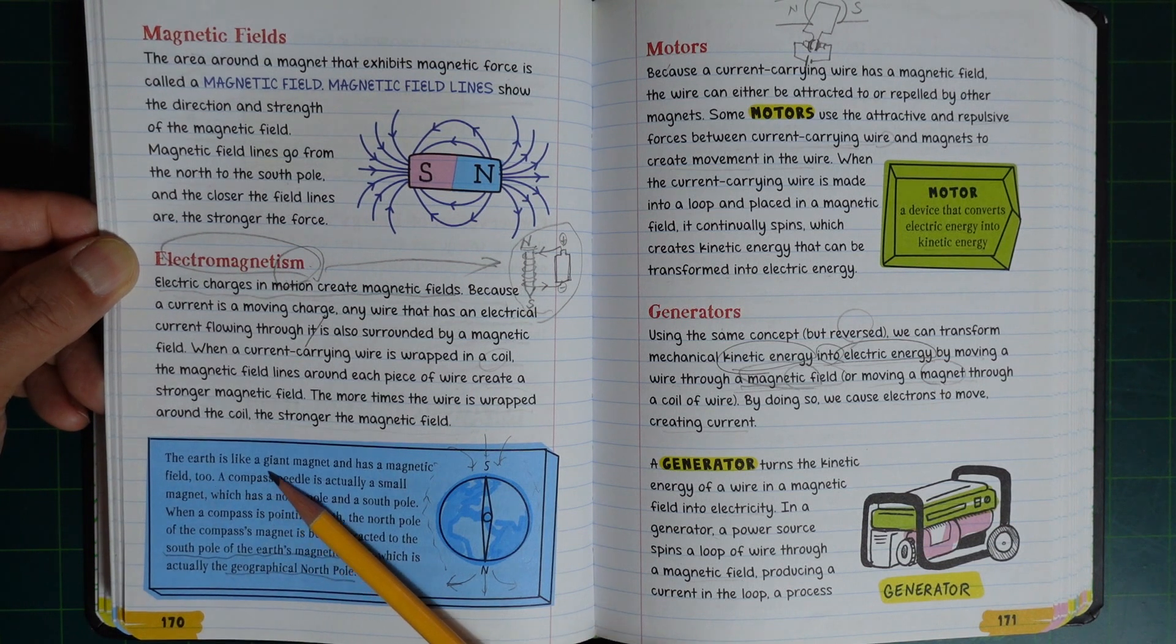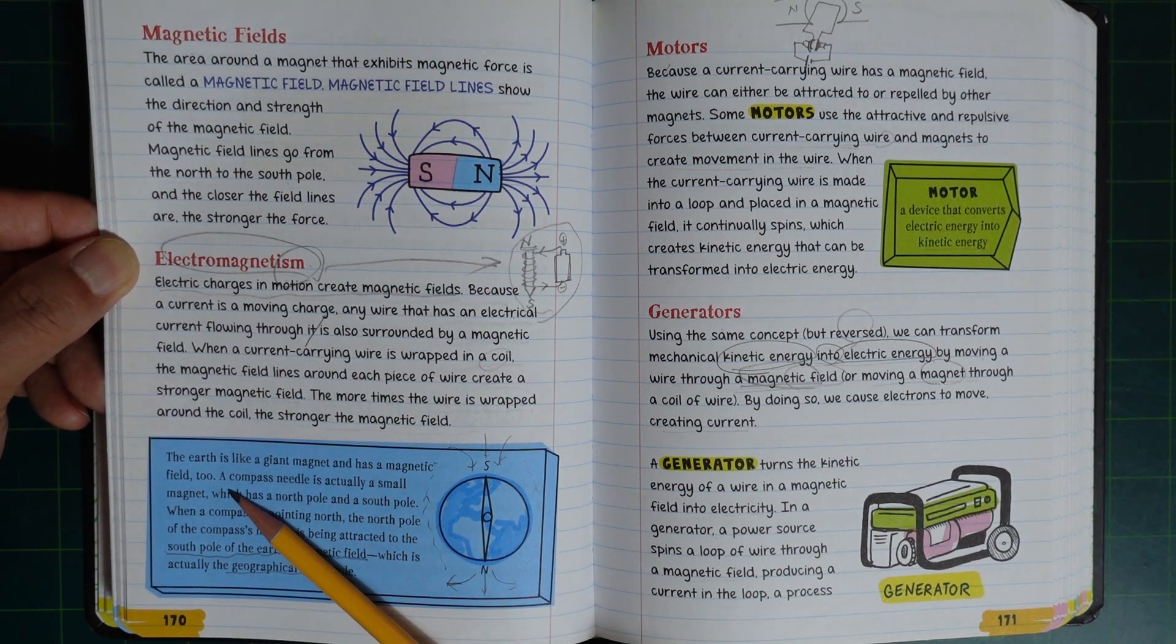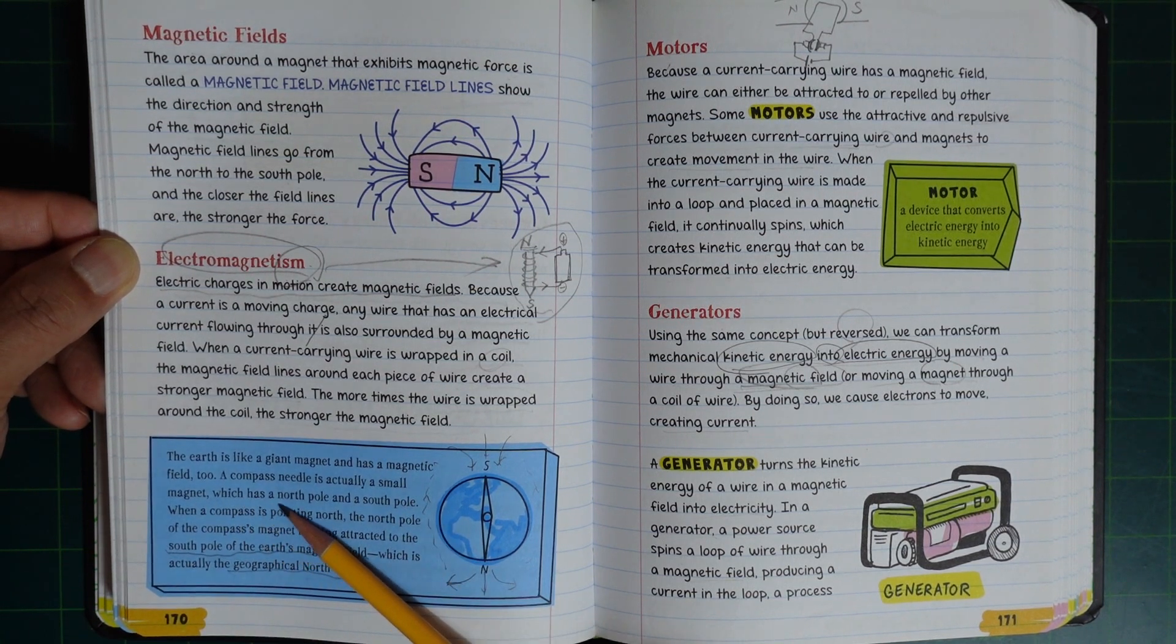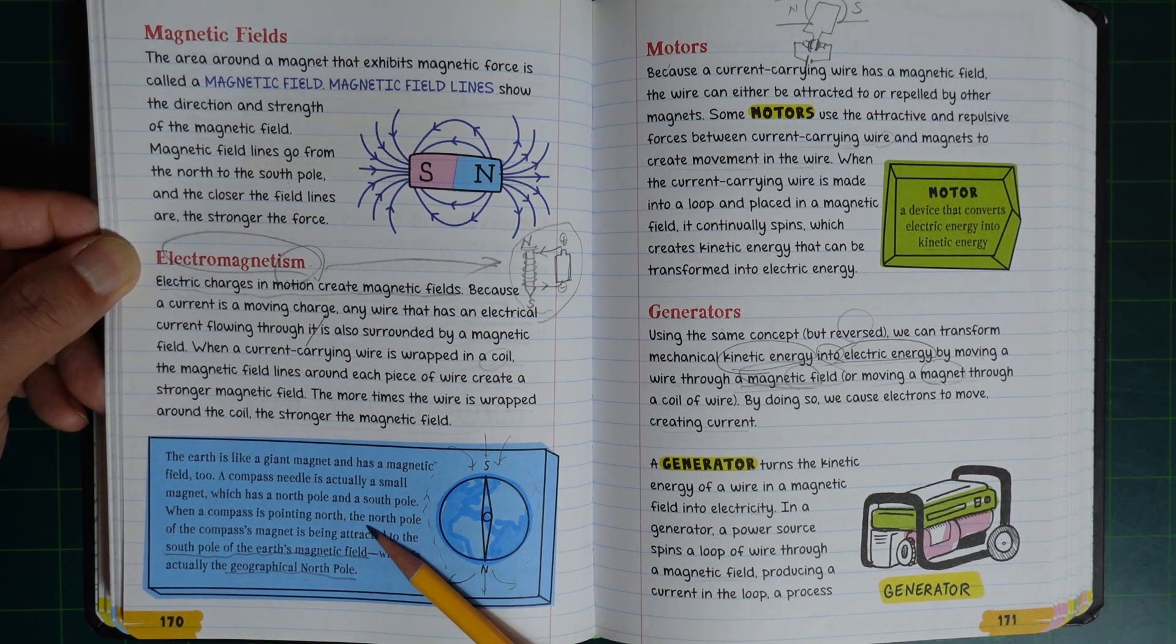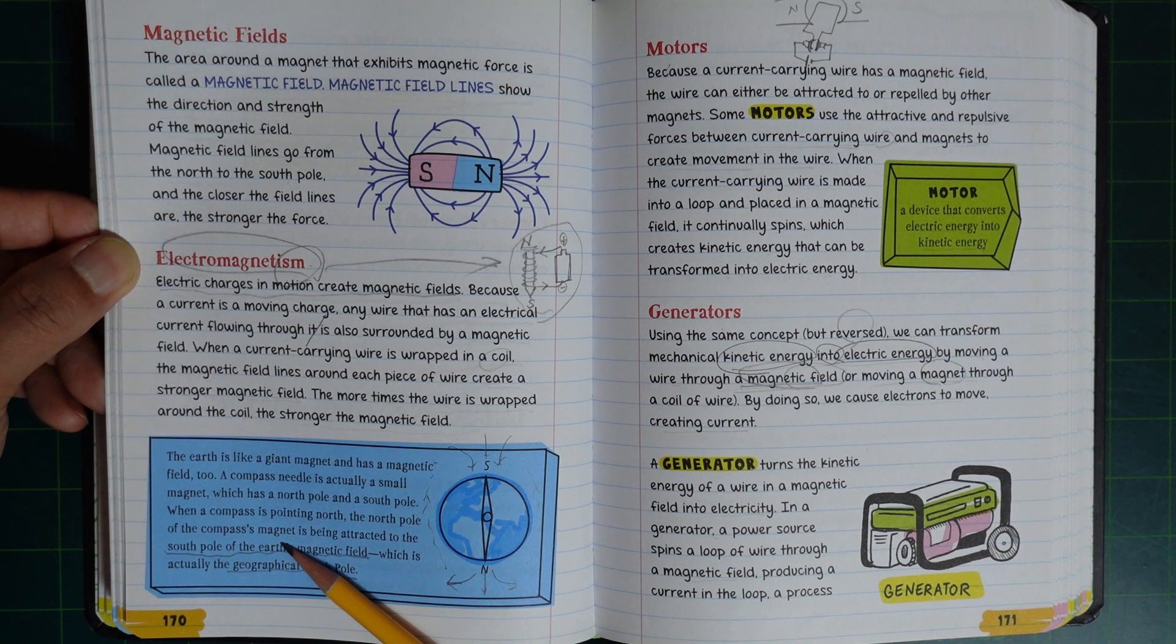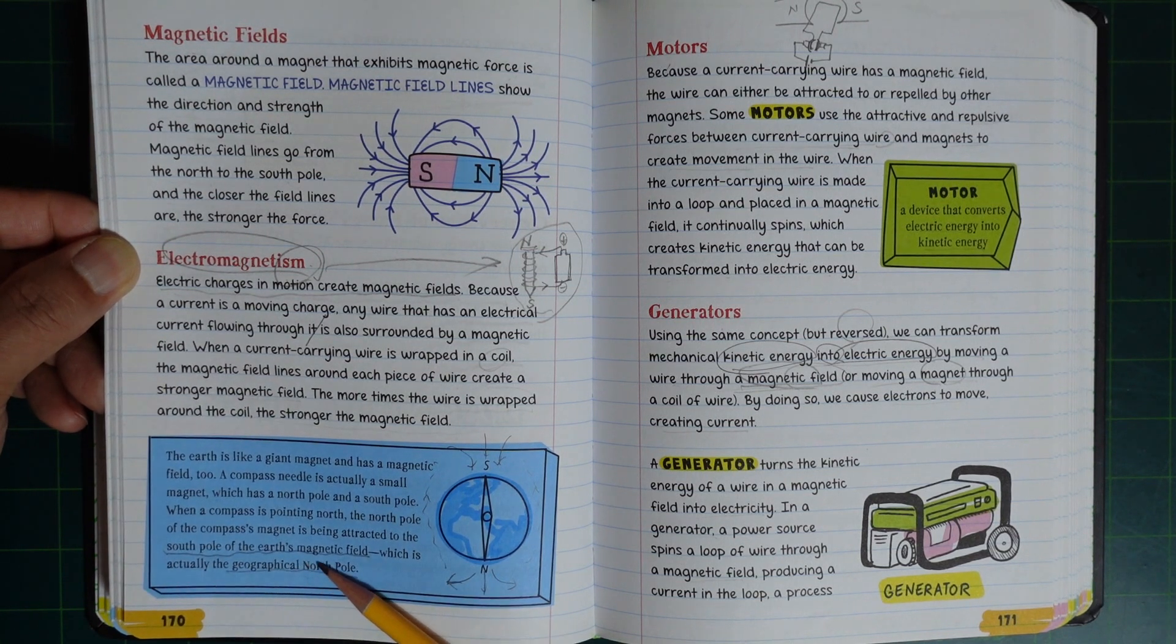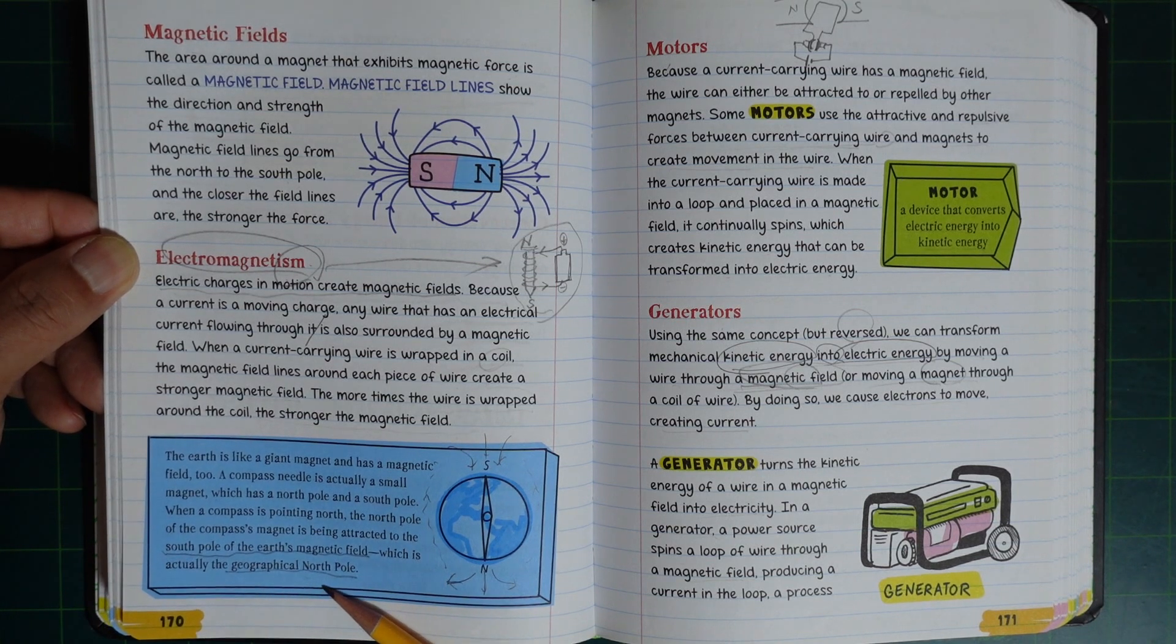The Earth is like a giant magnet and has a magnetic field too. A compass needle is actually a small magnet, each with a north pole and a south pole. When a compass is pointing north, the north pole of the magnet is being attracted to the south pole of the Earth's magnetic field, which is actually the geographical north pole.